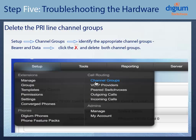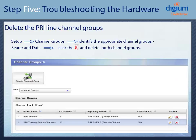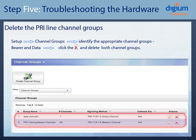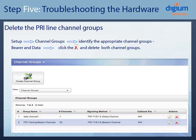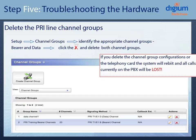To troubleshoot the hardware, the first thing we need to do is delete the PRI Channel Groups. You can do this by going to Setup, Channel Groups, identify the appropriate Channel Groups to delete, which would be the PRI data channel and the PRI bearer channels, and click the red X to delete each Channel Group Configuration. Remember, when you delete the Channel Group Configuration or the Telephony Card, the system will reboot and any calls will be lost.